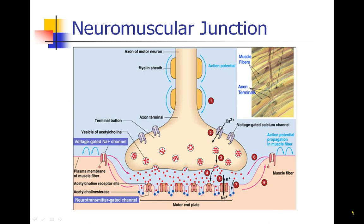This diagram shows everything just described. Here's the nerve cell, the neuron, surrounded by a myelin sheath. This is the axon, and at the end of the axon is the axon terminal — the end of the nerve cell. Over here is the muscle cell, and the space between them is the neuromuscular junction.